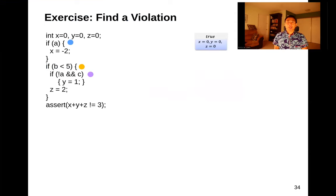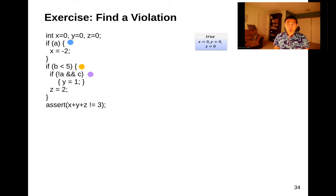Where we left off before the camera died, we were running through an example of symbolic execution. Here's an example: we have an admittedly contrived program with three branches — blue, yellow, and magenta. What we're going to do is try to find a violation of the assertion at the end of the procedure: we want to find some input where X plus Y plus Z equals three, or prove that no input causes X plus Y plus Z to equal three. We'll do that with symbolic execution by reasoning about all possible inputs A, B, and C.